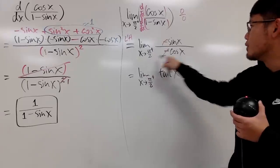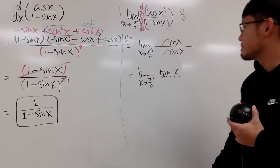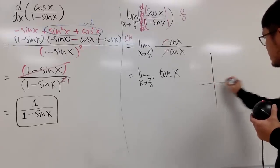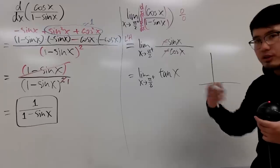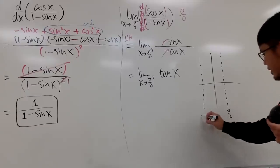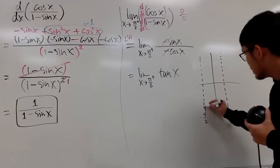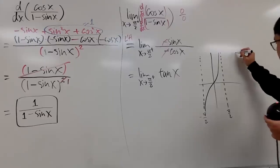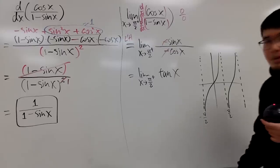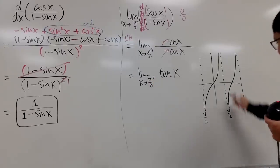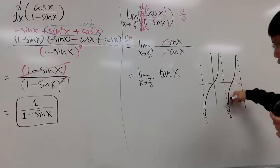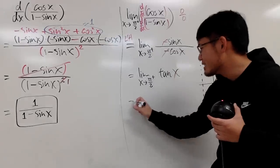Well, earlier, if you put pi over 2 right here, you get a zero in the denominator — that's no good. But if you look at tangent right here, one of the things you can do is refer to the graph. This is the graph for tangent. We know tangent has vertical asymptotes at pi over 2 and also negative pi over 2. The tangent goes like this and just keeps repeating. When x is approaching pi over 2 from the right-hand side, you are looking at this x value, and the y value is going straight down. So the answer to that is negative infinity.